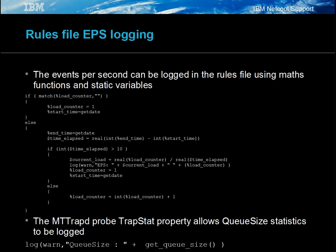The simplest way to log events per second is to use the maths functions. This gives a precise number of events processed. It is also possible to log the size of the event queue. This provides an indication as to how busy the probe is, as if the probe queue begins to fill, it indicates that the probe is not able to process the events as they arrive.